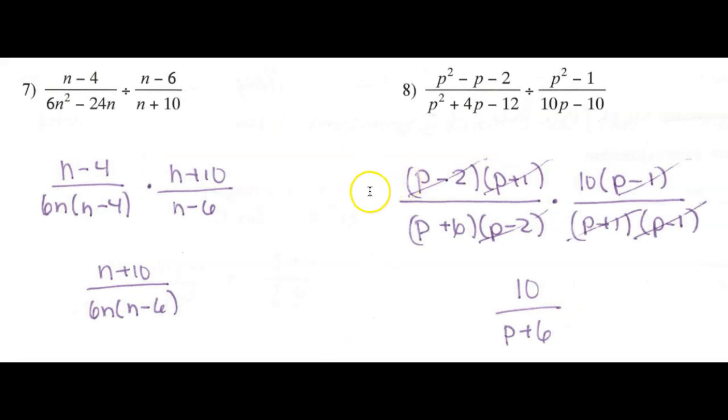Okay, so number 8 is fairly complicated. But if you take it a step at a time, you'll be able to handle it. You're just going to have to factor this quadratic, which is going to factor p minus 2, p plus 1.